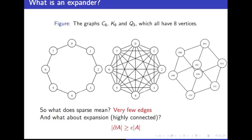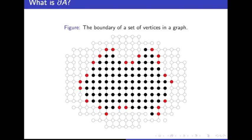What is the boundary exactly? It's a set of all vertices that are connected to that set, but not in it. So in this case, A would be the set of black vertices, and the boundary of A, denoted partial A, would be the red vertices.